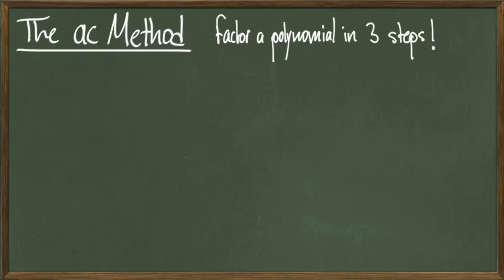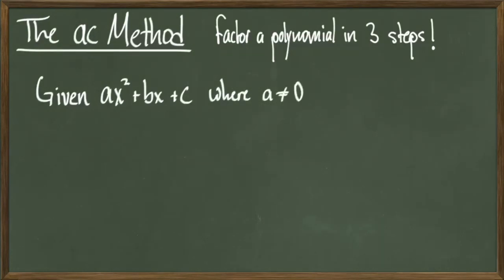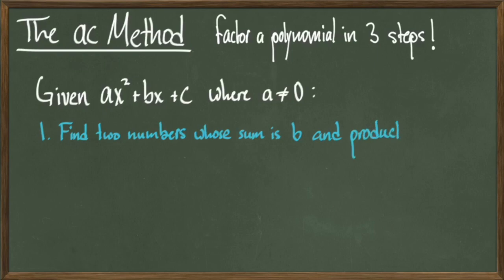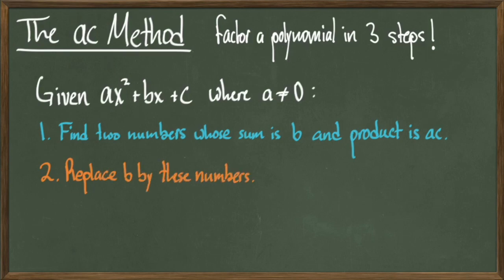In this video we will talk about something called the AC method, which is a three-step method of factoring polynomials of the form ax squared plus bx plus c where a does not equal 0. The first step is to find two numbers whose sum is b and whose product is a times c. Step two is to replace b by the sum of these numbers, and the third step is to factor by grouping.